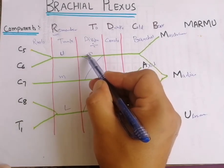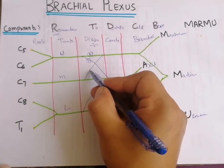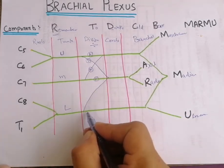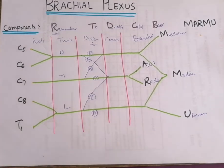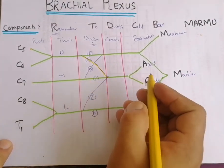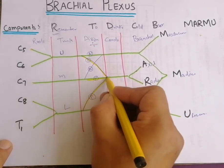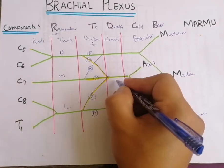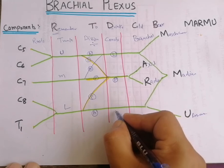The upper trunk gives two divisions: anterior and posterior. Similarly, the middle trunk gives anterior and posterior divisions, and the lower trunk also gives two divisions. The posterior divisions of the upper, middle, and lower trunks combine to form the posterior cord. The anterior divisions form the lateral cord and medial cord.